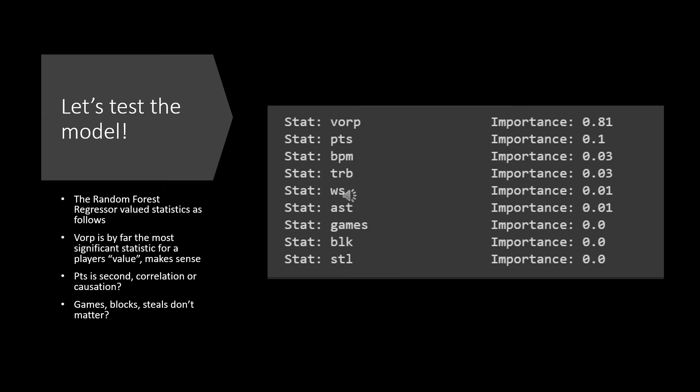After testing the model, we see that VORP has 81% feature importance, and points is second highest at 1%. Points being second does make sense, but it might be more correlation than causation, because the higher value players are often the ones taking more shots and thus scoring more points. A higher point total usually indicates a player's value to their team, but it doesn't always mean the player is more valuable league-wide, as younger players on worse teams may have similar point totals due to more opportunity. I was also surprised to see that games, blocks, and steals didn't mean anything.